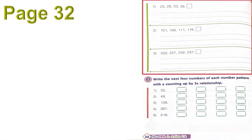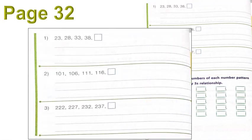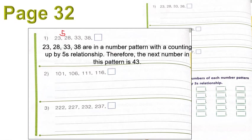Page 32, number one: find the next number in each pattern. For example: 23, 28, 33, and 38. To find the pattern, subtract 28 minus 23 to get 5 — meaning this is counting up by fives. So 38 plus 5 is 43. Please write in sentence: 23, 28, 33, 38 are in a number pattern with a counting up by fives relationship. Therefore, the next number is 43.